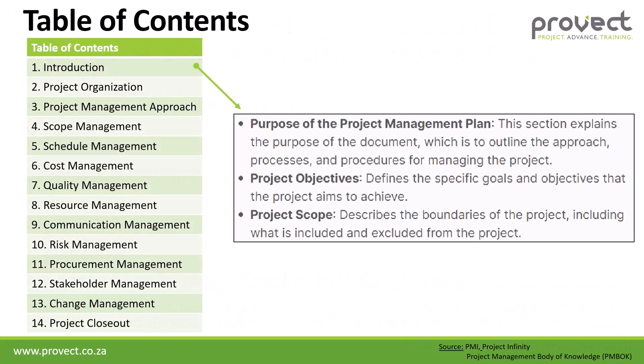Now let's have a look at the table of contents of the project management plan. The first section is our introduction. This is where we indicate the purpose of the project management plan, as well as your objectives — defining the specific goals and objectives that the project is aiming to achieve — as well as our project scope, describing the boundaries of the project, that is what is included and what is excluded.